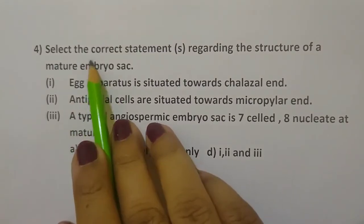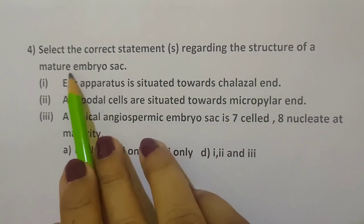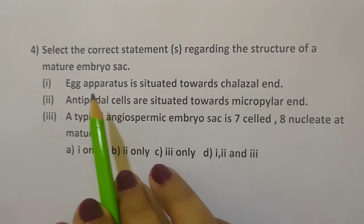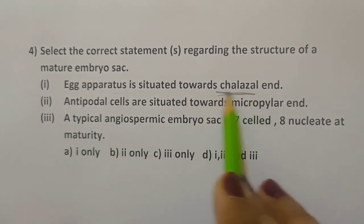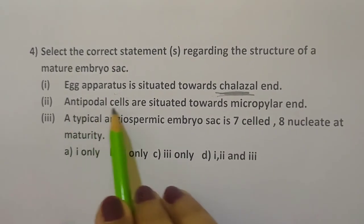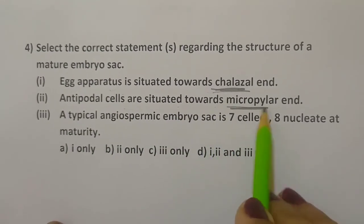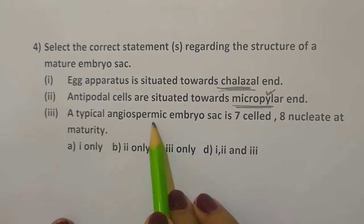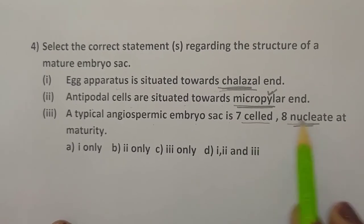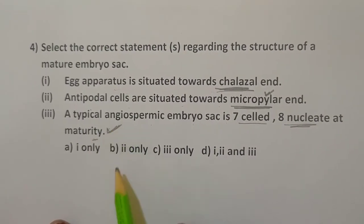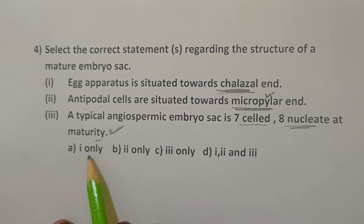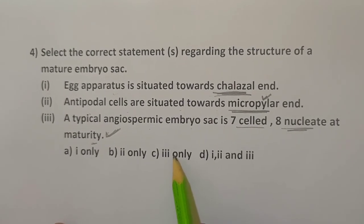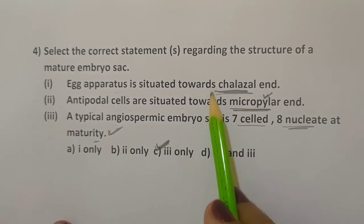Next question: Select the correct statement regarding the structure of a mature embryo sac. First: egg apparatus is situated towards the chalazal end — incorrect, as the egg apparatus is at the micropylar end. Second: antipodal cells are situated towards the micropylar end — incorrect, as antipodal cells are at the chalazal end. Third: a typical angiospermic embryo sac is seven-celled and eight-nucleate at maturity — this is completely correct. So option three is the correct answer.